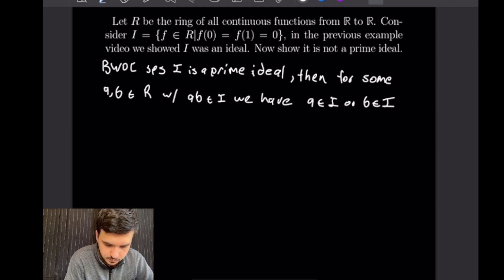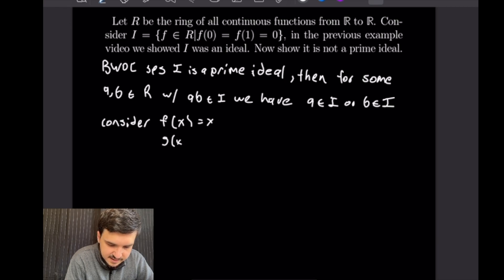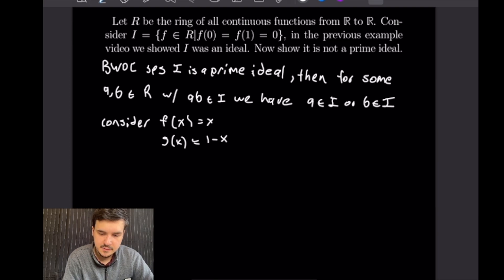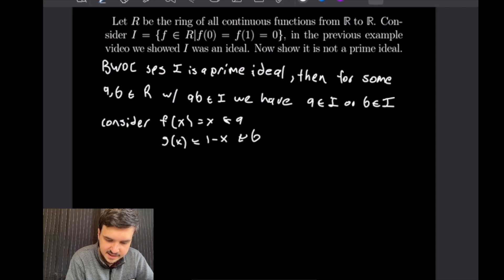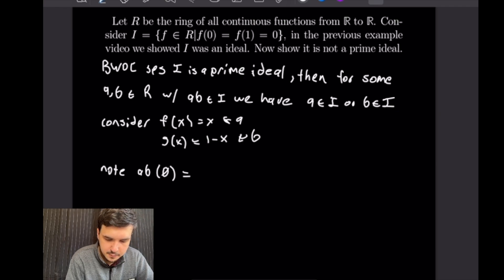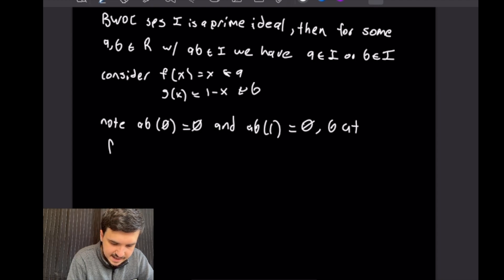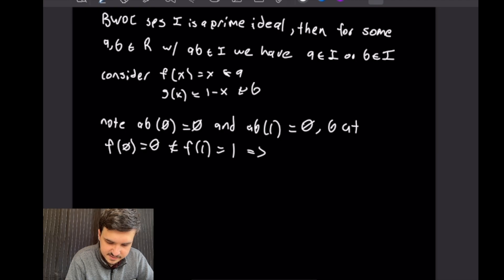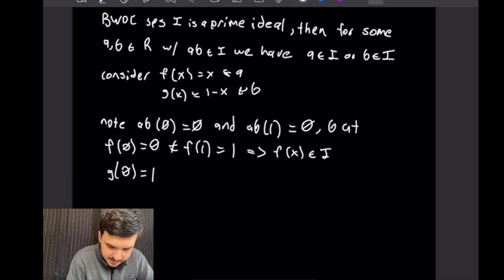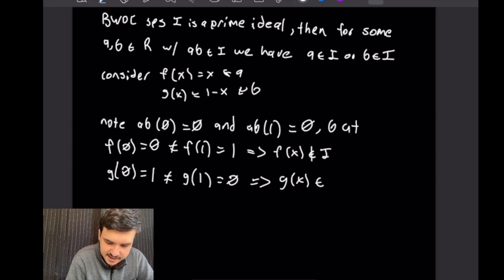Consider the functions f(x) = x and g(x) = 1 − x, which are clearly continuous functions from ℝ to ℝ. Call these A and B respectively. Note that (A·B)(0) = 0 and (A·B)(1) = 0, so A·B is in I. However, f(0) = 0 but f(1) = 1, so f(x) is not in I. Also, g(0) = 1 ≠ 0 = g(1), so g(x) is also not in I.